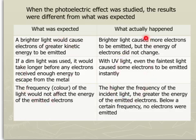The first one is, a brighter light would cause electrons of greater kinetic energy to be emitted. Because brighter light means more energy, therefore electrons would have got more energy. But this is what actually happened. Brighter light causes more electrons to be emitted, yes. But the energy of each electron did not change.